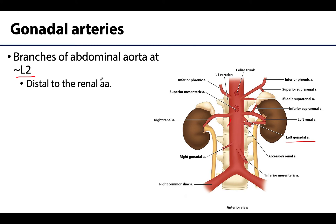Functionally, why do these arteries branch so proximally when the ovaries and testes are located comparatively so inferiorly? In utero, the gonads actually flank the vertebral column just inferior to the kidneys, so during that time these gonadal arteries are relatively short. But as the gonads descend to their adult positions — the ovaries into the pelvic cavity and the testes into the scrotum — those gonadal arteries lengthen, resulting in the relatively long gonadal arteries.